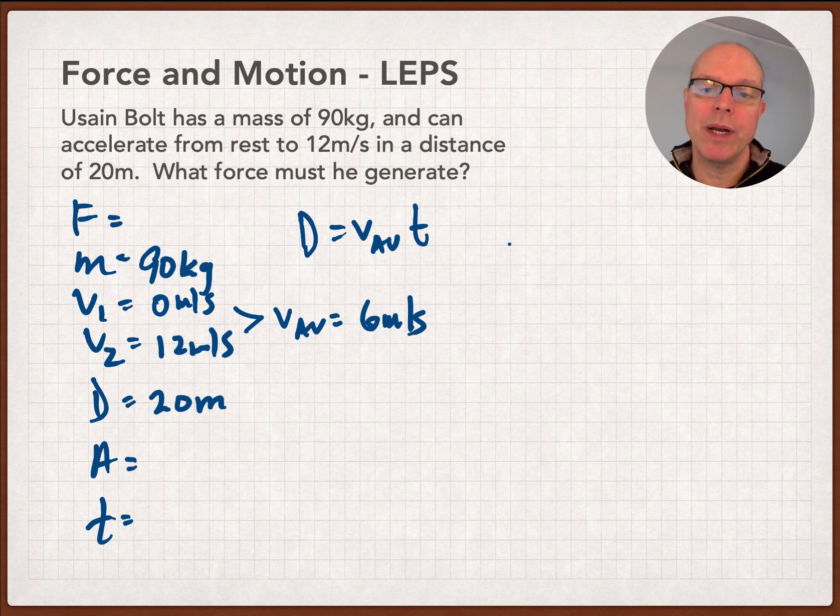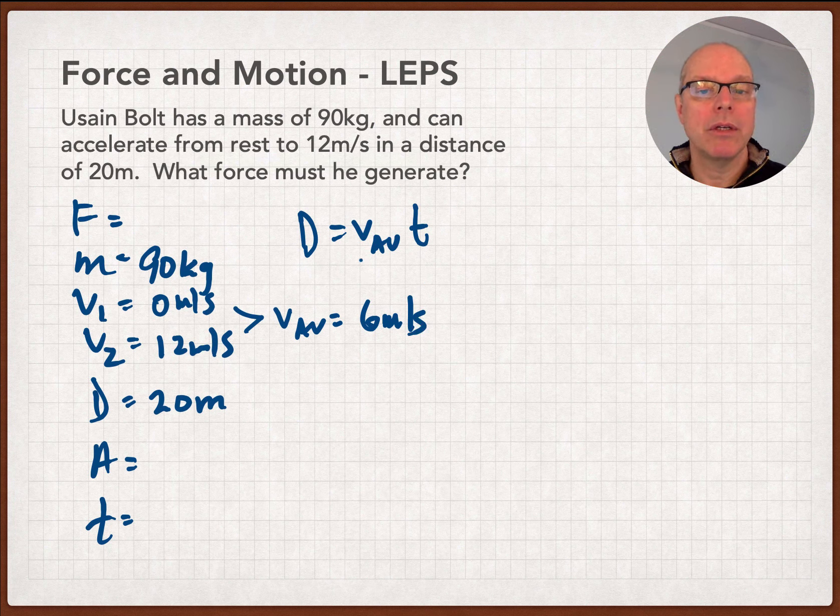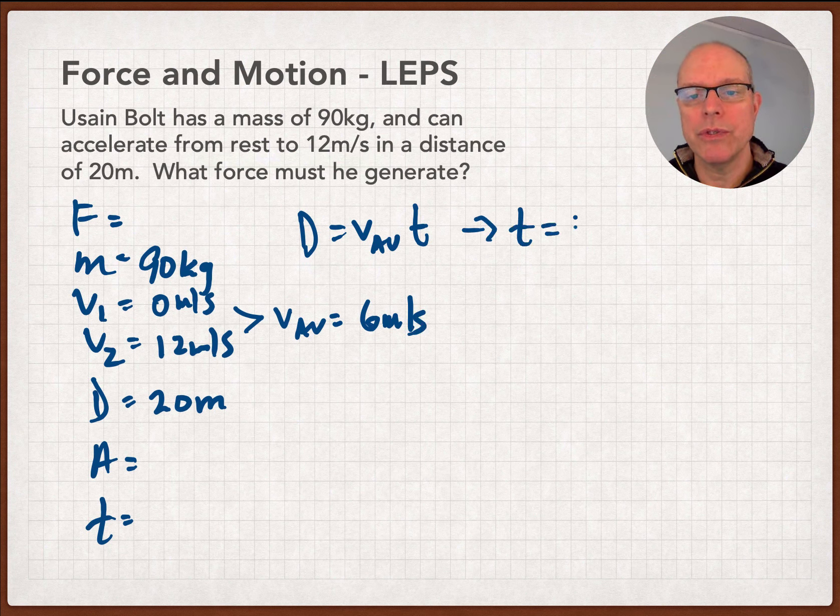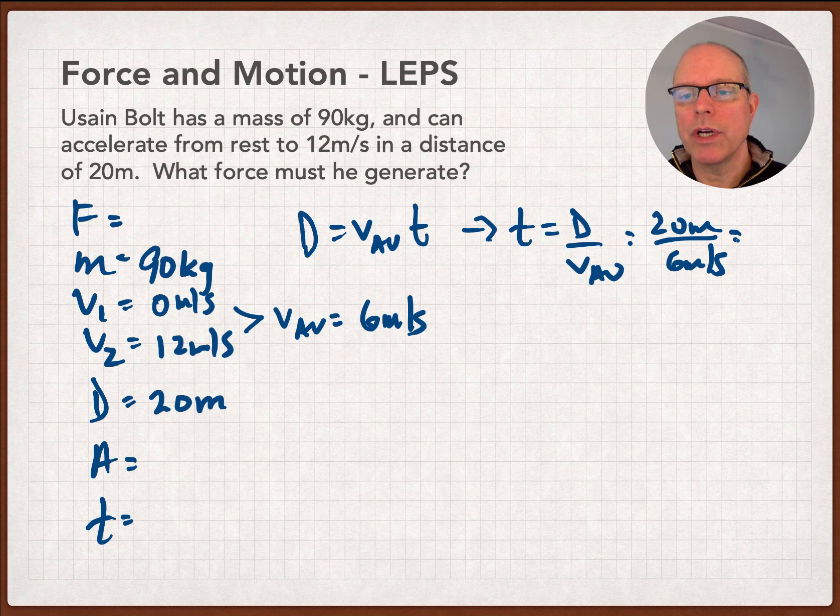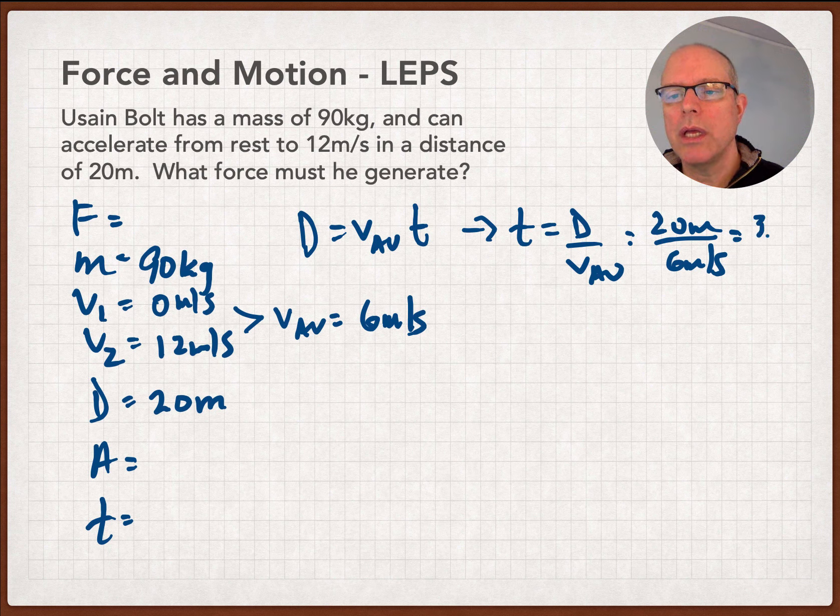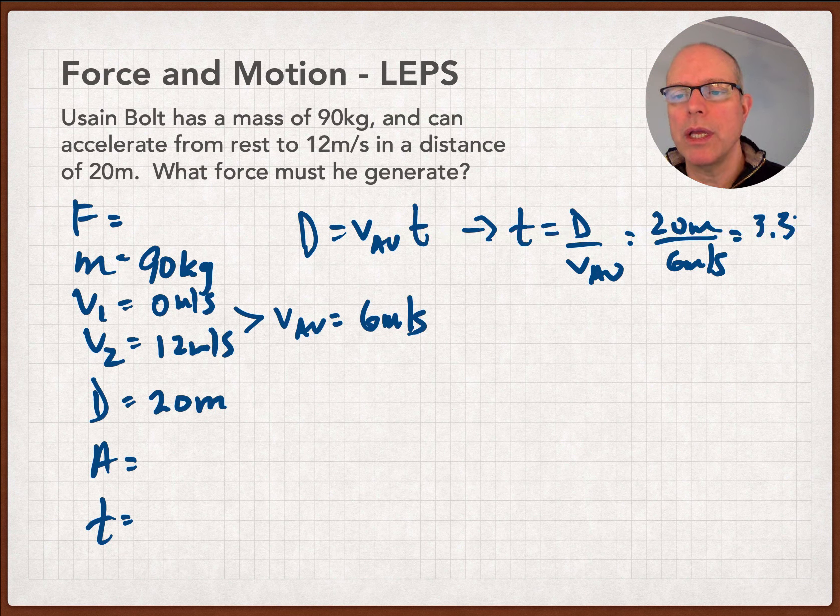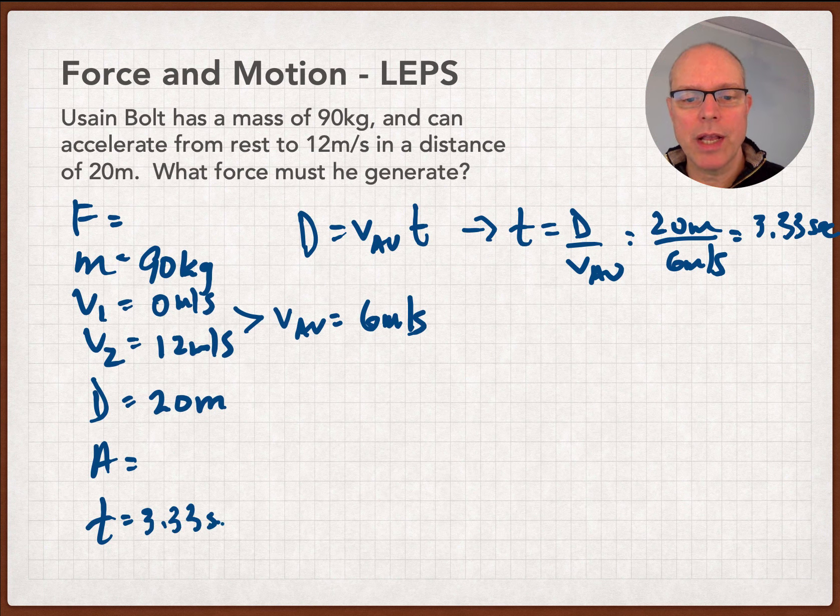So what I'm going to do is get right to work with this one right here and solve it for the thing I don't know. I'm going to divide both sides by V average, and I'm going to rewrite it as T equals D over V average. Pencil in what I know, 20 meters over 6 meters per second, and we're going to figure out that it takes Usain Bolt, 20 over 6 is 3, and let me see, 18 and 2 left over is 3.33 seconds. Okay, so there we go. Next thing we're going to do is keep on moving. Now that the time is 3.33 seconds, let's see if we can go one level up.